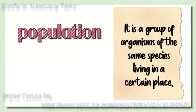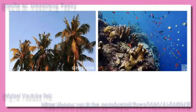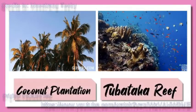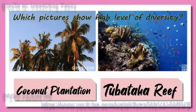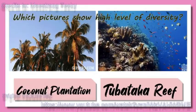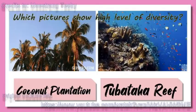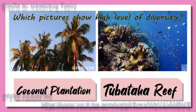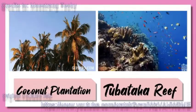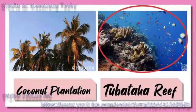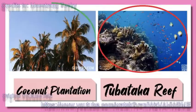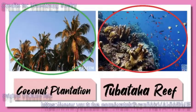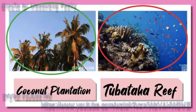What is population in biodiversity? It is a group of organisms of the same species living in a certain place. Now, what can you say about these two pictures? The first picture is a coconut plantation and the second picture is the Tubataha Reef. Which picture shows a high level of diversity? Tubataha Reef, with different kinds of aquatic species, is more diverse than a coconut plantation. Tubataha Reef or marine ecosystem has different groups of organisms of the same species than a coconut plantation with lesser groups being dominated by coconut trees. In short, Tubataha Reef has more population than coconut plantation.